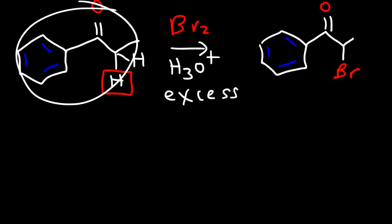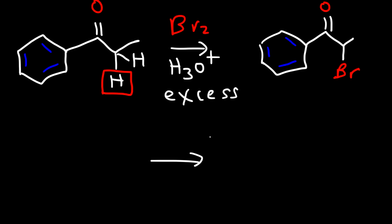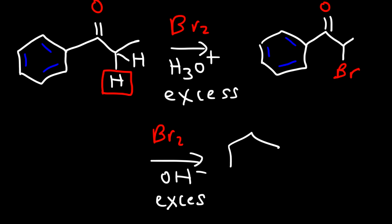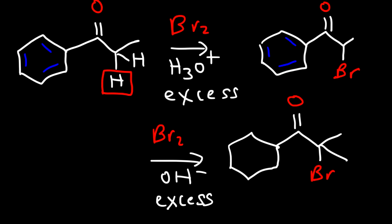Now using the same reactant, what's going to be the major product if we react it with excess Br2 under basic conditions? Under basic conditions we can replace all of the alpha hydrogen atoms. There are two alpha hydrogen atoms, so we're going to have two bromine atoms at the alpha carbon. Under acidic conditions you can only replace one alpha hydrogen with a halogen, but under basic conditions you can replace all of them if you use excess Br2.